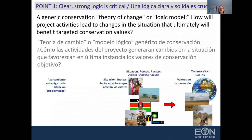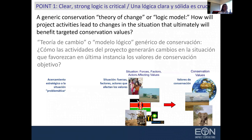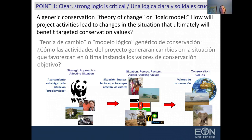After we've defined our conservation values, we assess the situation that is affecting those values. Is it the private sector? Is it local communities? Is it policy and law? All the array of factors, including threats, that are affecting those conservation values. El segundo punto es evaluar la situación que afecta esos valores, y pueden ser factores de distintos ámbitos que los afectan diferentemente. Luego, tenemos que pensar en actores que cambien las condiciones de modo que esos valores no se vean afectados negativamente.